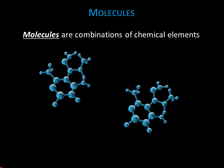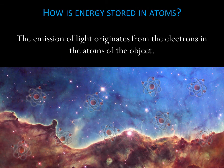Now that we have some background, we can get to the nitty-gritty of how celestial objects emit light from their atoms. The key idea is that the emission of light originates from the electrons in the atoms of the object.